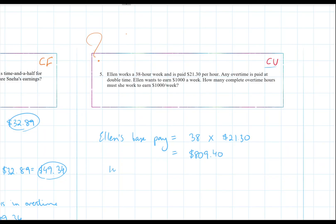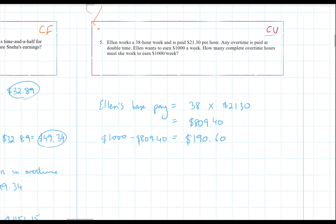Now she still needs $1,000 minus $809.40. So she still needs $190.60 to earn $1,000 a week. And she's going to make this by working overtime. Now, her overtime pay is double her regular pay. So that's going to be 2 times $21.30, which is $42.60 an hour.